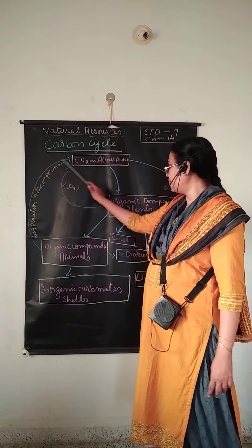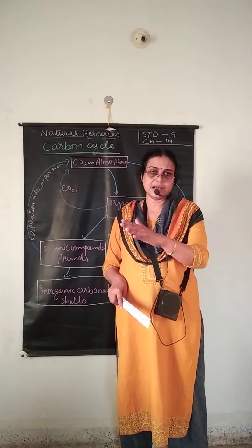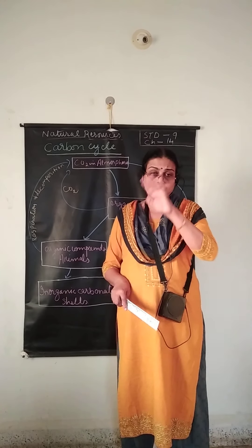This is how the carbon cycle takes place. Now, carbon dioxide has a property of absorbing heat, and when it absorbs the heat, that is called the greenhouse effect.